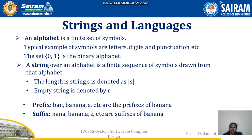First we will see strings and languages. It defines what is meant by alphabet, string, prefix, suffix and so on. An alphabet is a finite set of symbols — letters, digits, punctuation symbols, etc. For example, the set {0, 1} is the binary alphabet.